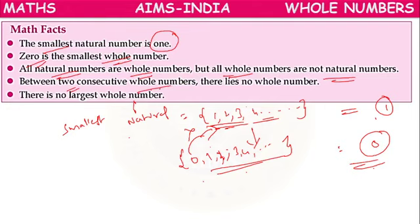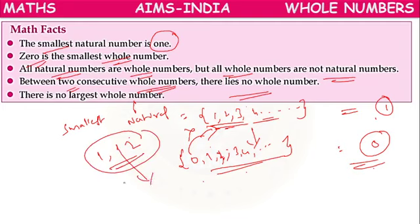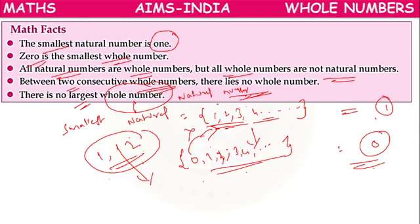Between two consecutive whole numbers, there is no whole number — for example, between 1 and 2 there is no other whole number. Also, there is no largest whole number and no largest natural number. We can tell the smallest whole number and smallest natural number, but the largest does not exist.